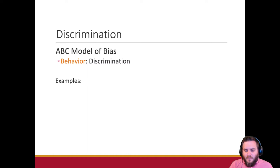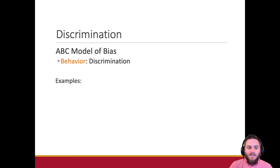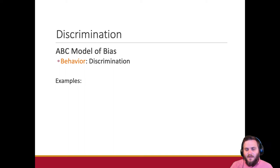Discrimination can be perceived or real. It can be a personal thing or it can be an institutional thing. What we're seeing recently is that more Black men are pulled over and harassed by police than any other group. Or it could be personal, like refusing to hire a male babysitter — as if there's something inherently wrong with men being good caretakers of children. Dads are often called the babysitter, but they're parenting.